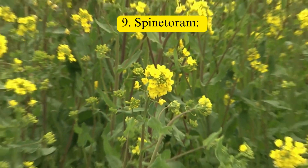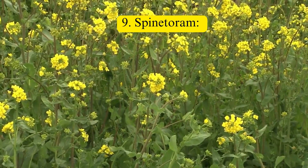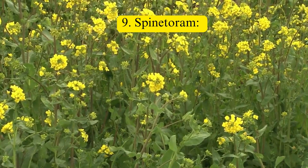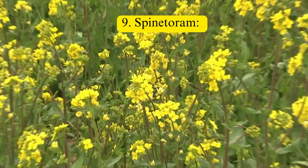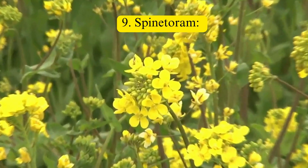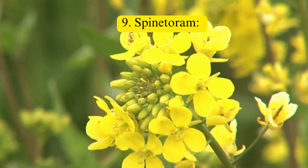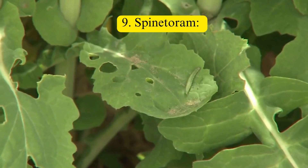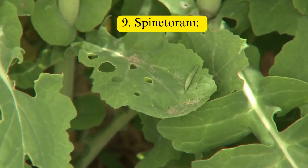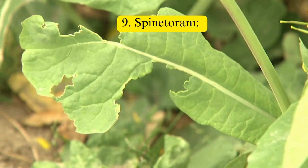Spinetoram: Similar to spinosad, spinetoram is a fermentation product of Saccharopolyspora bacteria. It disrupts the nervous system of insects, leading to muscle contractions and death. It is effective against a broad range of pests, including the diamondback moth.